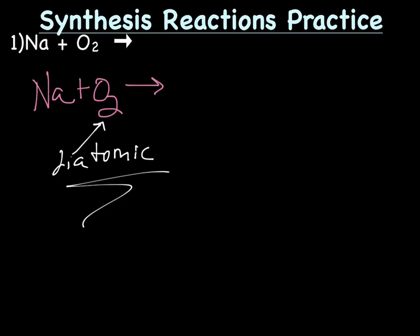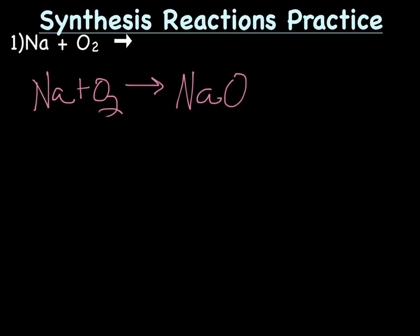But when you come over for the product, you're not going to bring that 2 with you. You don't bring subscripts with you. We just have NaO. Now, we've just written a formula, right? So we've got to ask ourselves the question, ionic or covalent? And the answer is ionic because sodium is a metal, oxygen is a non-metal, which means we need to check the charges. Sodium is a 1 plus, oxygen is a 2 minus. That means our formula is going to be Na2O.